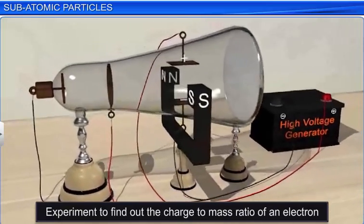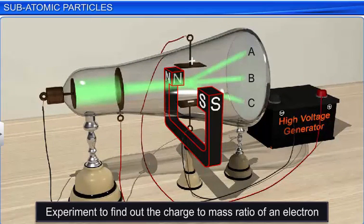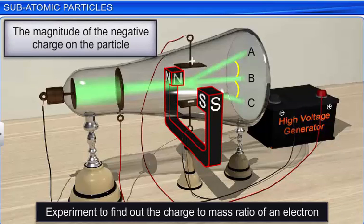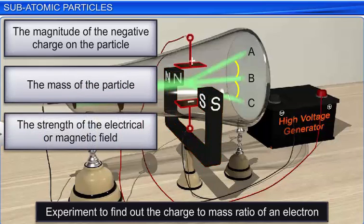Thomson then tried to calculate the charge-to-mass ratio of electrons by applying electrical and magnetic fields perpendicular to each other as well as to the path of electrons flowing in a cathode ray tube. He observed that the amount of deviation of electrons from their path depends on three main factors: the magnitude of the negative charge on the particle, the mass of the particle, and the strength of the electrical or magnetic field.